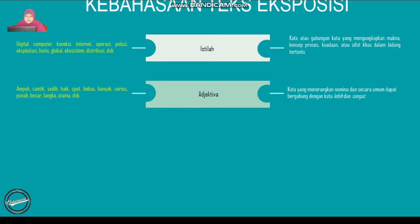Kebahasaan selanjutnya ada yang dinamakan adjektiva atau kata sifat. Adjektiva merupakan kata yang menerangkan nomina atau kata benda secara umum dan dapat bergabung dengan kata lebih atau kata sangat. Contohnya ada kata ampuh, cantik, sedih, baik, cepat, bebas, banyak, serius, punah, bosan, langka, utama, dan sebagainya.